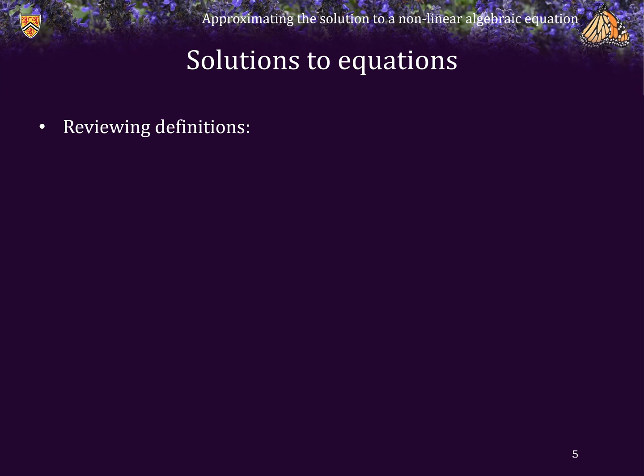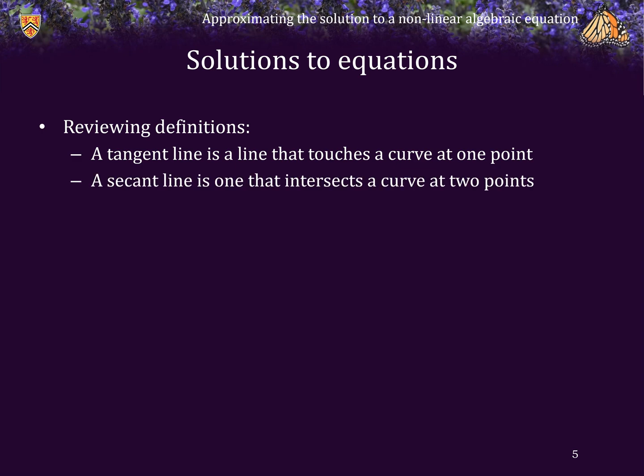Next, let's review some definitions. A tangent line is a line that touches a curve at a single point. A secant line is one that intersects a curve at two points.